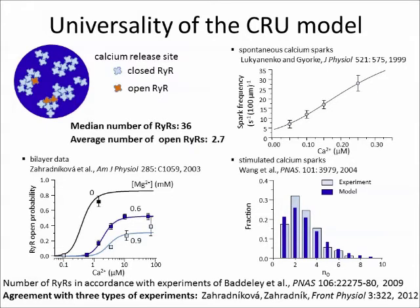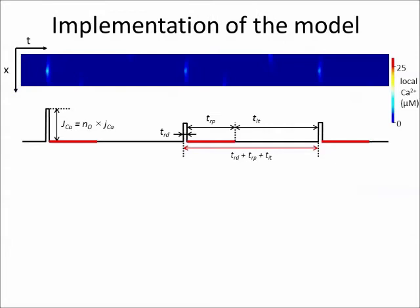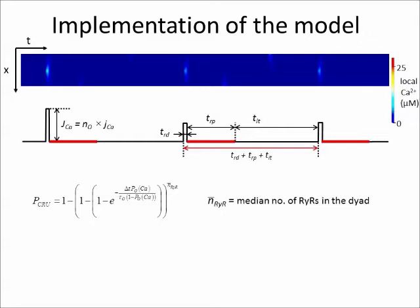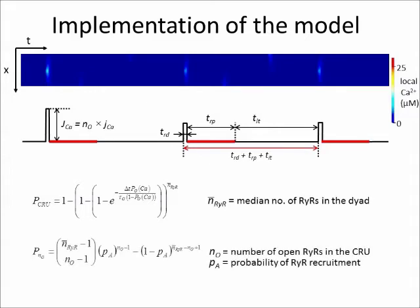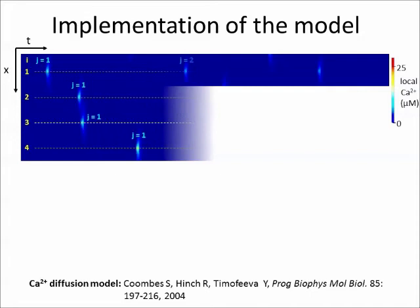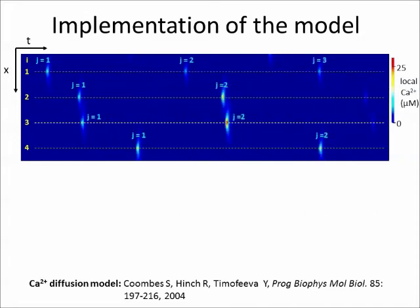This gave an average number of about 2 to 3 open channels per calcium release unit, in accordance with previous findings. To simulate the generation of calcium sparks and waves, the value of spark frequency had to be translated into the probability that the calcium release unit will generate a calcium spark within a time interval, and the average number of open ryanodine receptors in a spark had to be translated into the probability that there will be exactly NO open channels. This approach enabled us to simulate sparks on stochastic grounds at a given cytosolic calcium concentration, the spatiotemporal evolution of which was calculated using the far-diffused fire model of Coombs and colleagues.